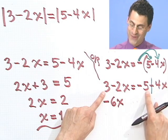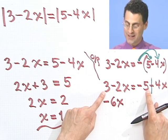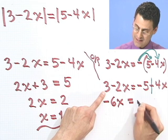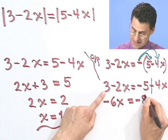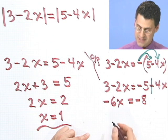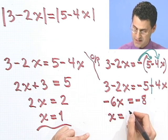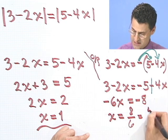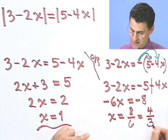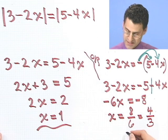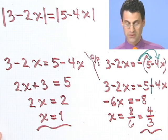If I bring that over, it becomes negative 3. So negative 3 and negative 5 is negative 8. Dividing both sides by negative 6, I see x equals negative divided by negative, which is positive: 8 sixths, which if I cancel becomes 4 over 3. So x equals 4 thirds is another answer.